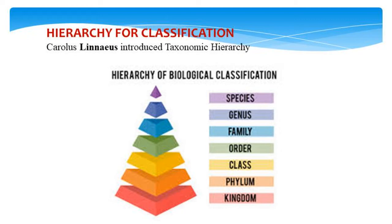Coming to the hierarchy for classification, the taxonomic hierarchy was given by Swedish botanist Carolus Linnaeus, who developed it in the early 1700s. The most basic classification of living things is kingdom, followed by phylum, class, order, family, genus, and species. Species are the lowest and most strict level of classification, and the main criteria for placement in a particular species is the ability to breed with other organisms of the same species.